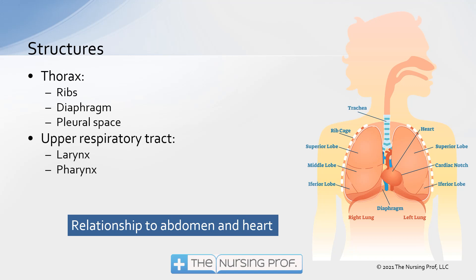In the thorax we have the ribs, which are very important with respiration because they help to define the space of the lung. Between the intercostal muscles, they help to expand and contract the thorax, which causes air to go in and out. The diaphragm is a very important muscle at the bottom, responsible for a lot of our air movement. As the diaphragm contracts, it flattens, creating negative pressure in the intrapleural space, which causes air to be sucked into the lungs.